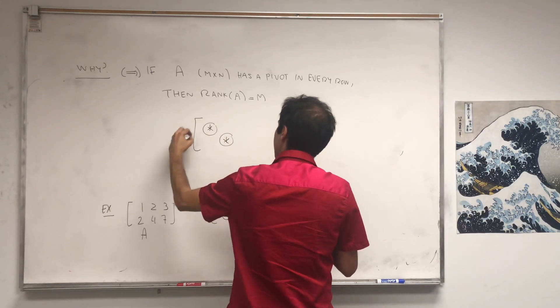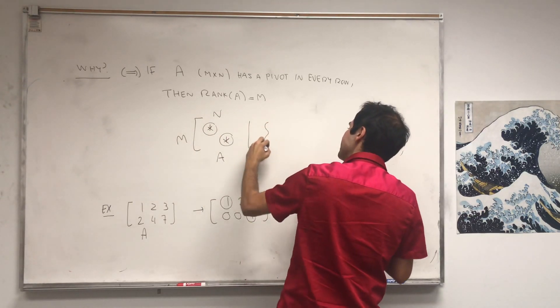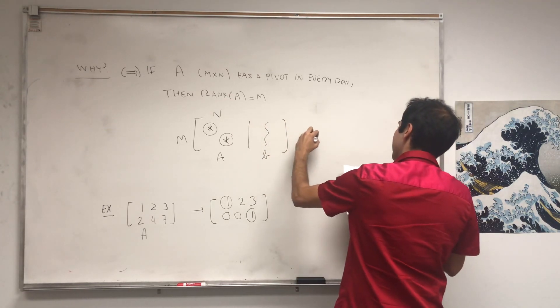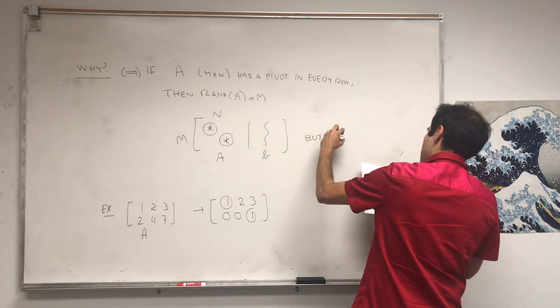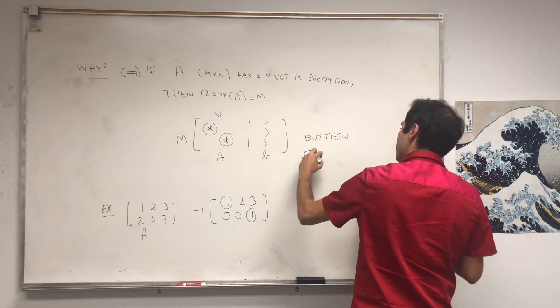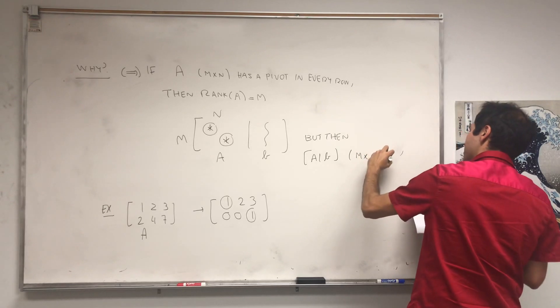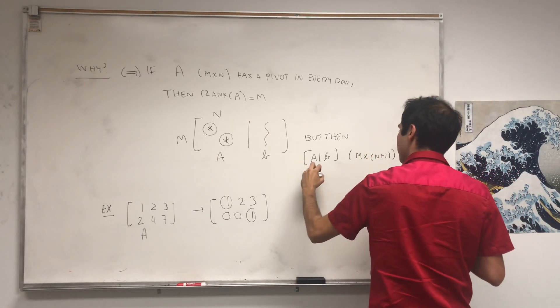So suppose A is M by N. Well, if you add any B here, it'll still have the same rank. So, but then, the augmented matrix, which is of size M times N plus 1, also has a pivot in every row.